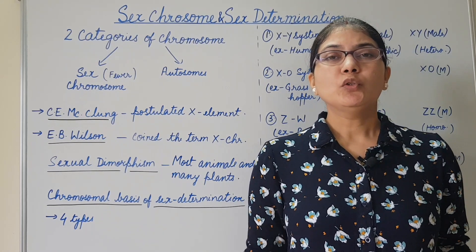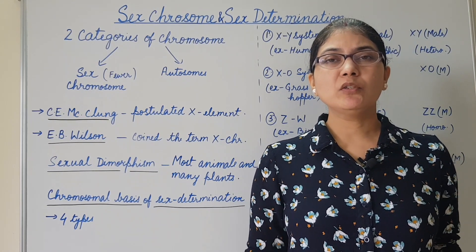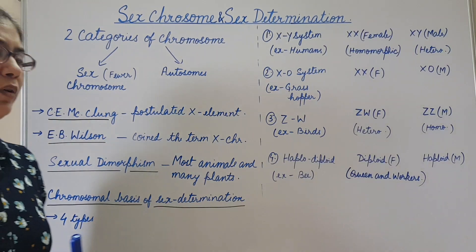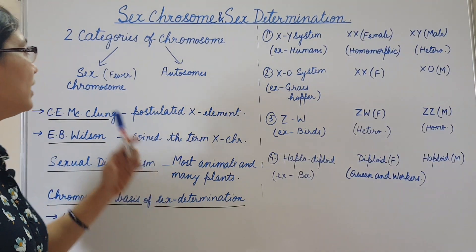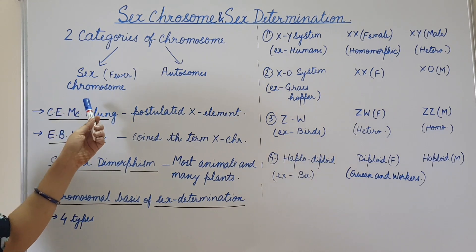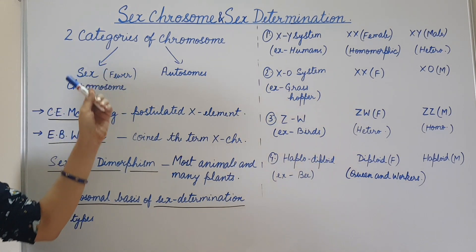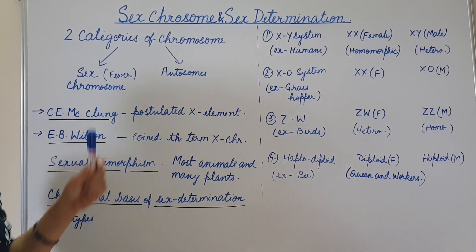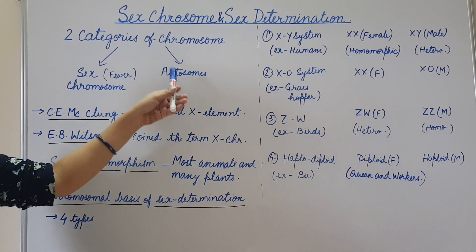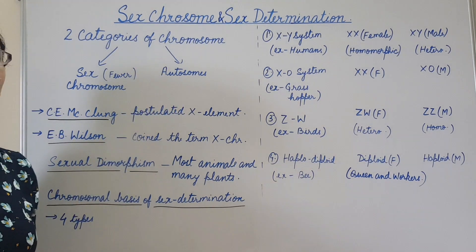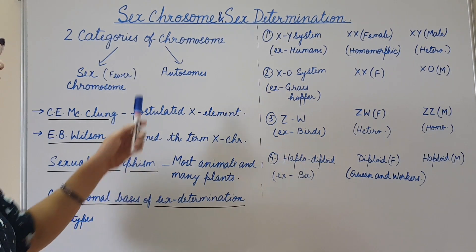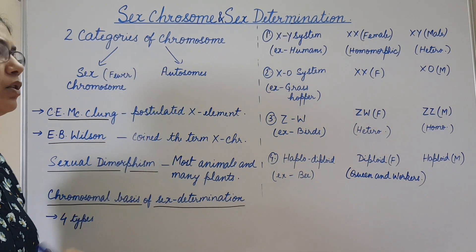Hello friends, today we are going to learn about sex chromosome and sex determination. We know that there are two categories of chromosomes: sex chromosomes, which are fewer in number — like in diploid organisms, a pair of sex chromosomes is present — and autosomes. The rules of inheritance we have seen are actually the rules for the autosomes.